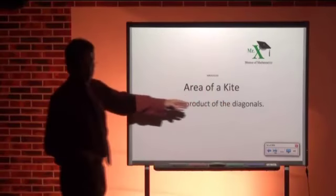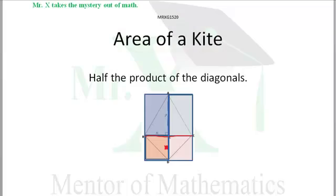Hi, Mr. X with glossary term area of a kite. Here's an easy one, it's half the product of the diagonals.